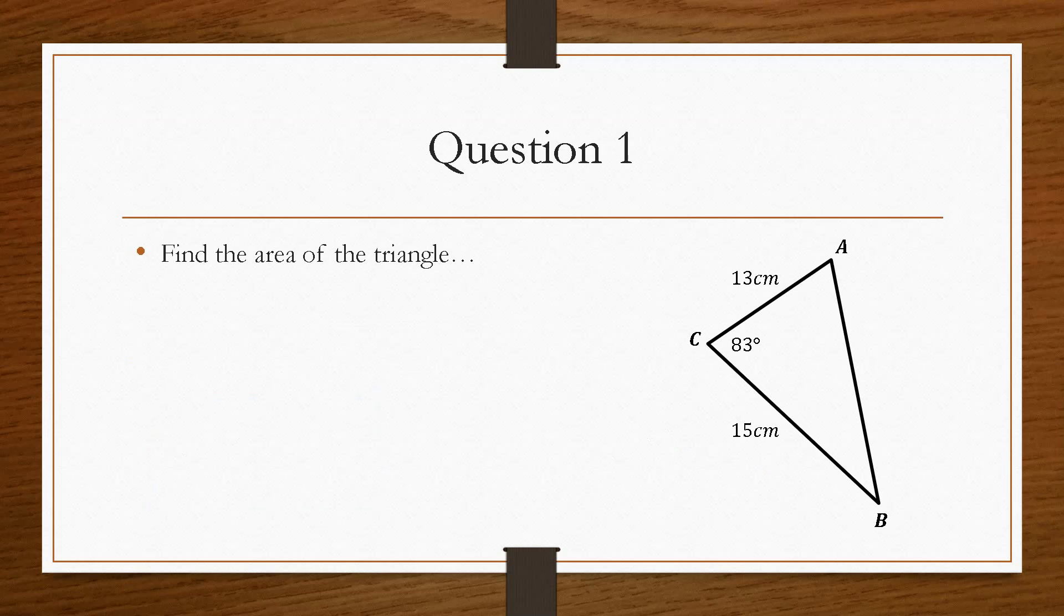So question one gives us this triangle and asks us to calculate the area of triangle ABC, with the length of AC being 13 centimetres, BC 15 centimetres, and the angle in between is 83 degrees.